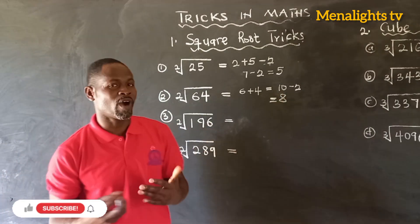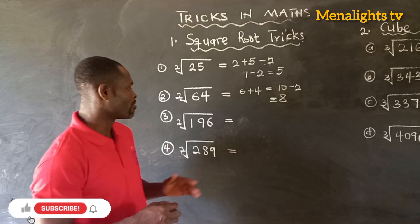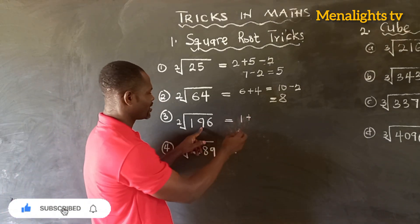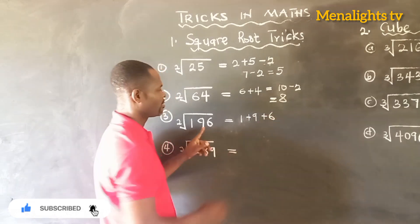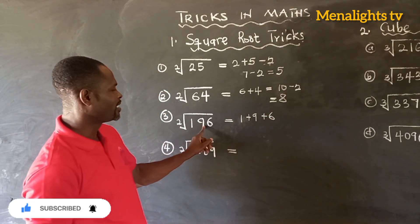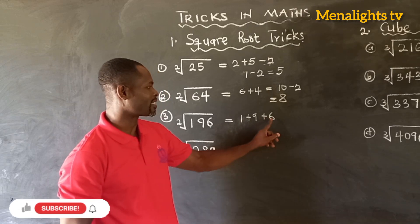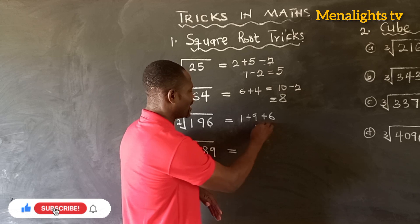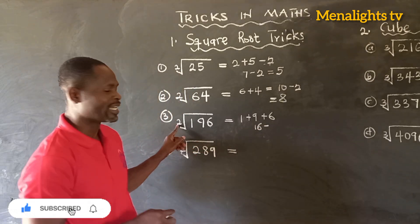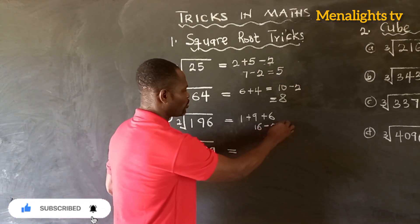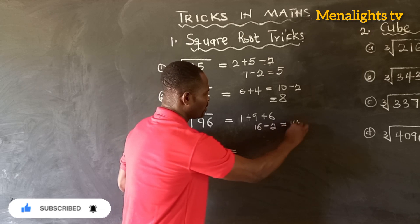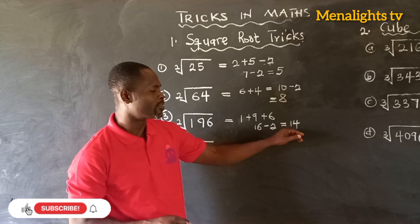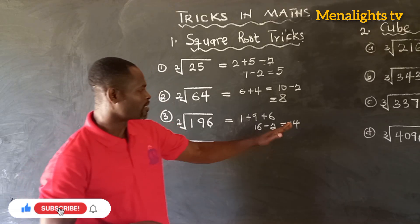The third one: find the square root of 196. So what you have to do is 1 plus 9 plus 6, which gives us 16. So we have 16 minus 2, and that will give us 14. That means the square root of 196 is 14.